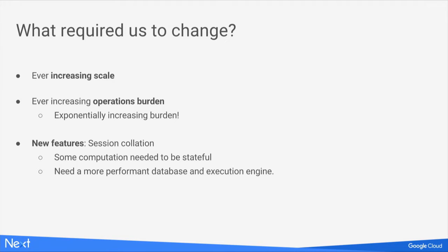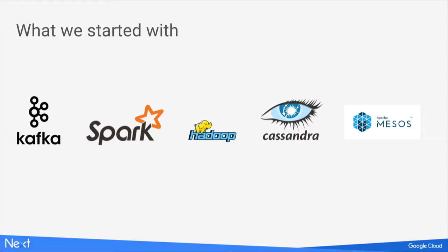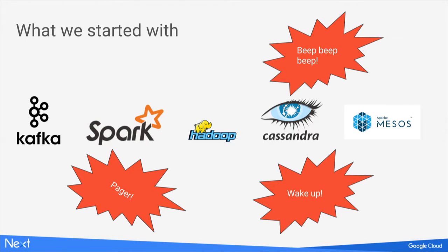We wanted a more performant execution engine and a more robust database layer. We did our research and found that everyone recommended a slew of technologies: Kafka, Spark, Cassandra, Hadoop, Mesos — all good, open source, performant, with big communities. So we started planning, and within the first 15 minutes it became clear: this is a lot of systems to manage with five people. We would essentially just be managing these systems — becoming experts at each one, establishing them, building monitoring, dashboards, alerts, and tuning hundreds of configuration variables.